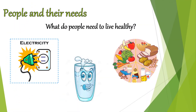Now let's go to the last topic for this revision session: People and Their Needs. What do people need to live healthy? The first picture shows electricity — yes, we need electricity to do a lot of things. Unfortunately South Africa has load shedding, but we hope that's going to work out in the future. Then we have a glass of water — everybody knows we need water to survive. Water is very, very important. And then we have food — we need food to survive. All of these things we need; it's not a want, we need them to survive.